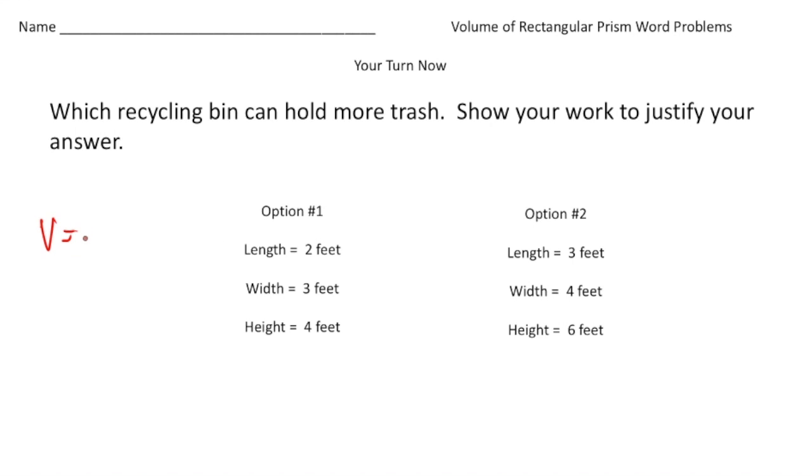So again, volume equals length times width times height. I'm going to write that down for both. So volume equals length times width times height. And now it's just a matter of plugging in the values. So this is going to be 2 times 3 times 4. And 2 times 3 is 6, 6 times 4 is 24. So the volume of the first bin is 24 cubic feet.